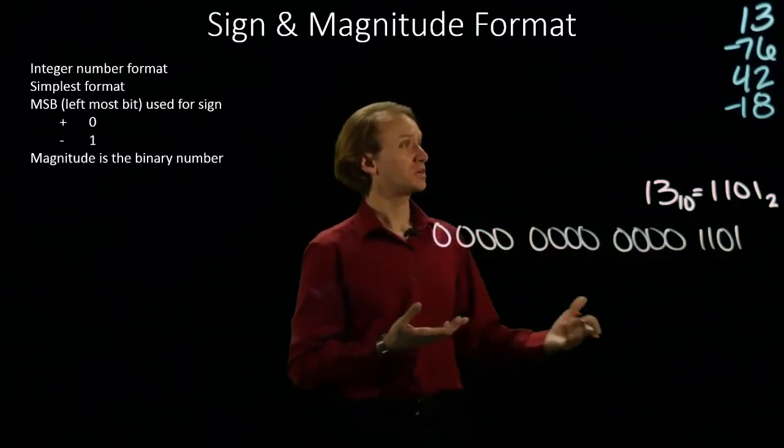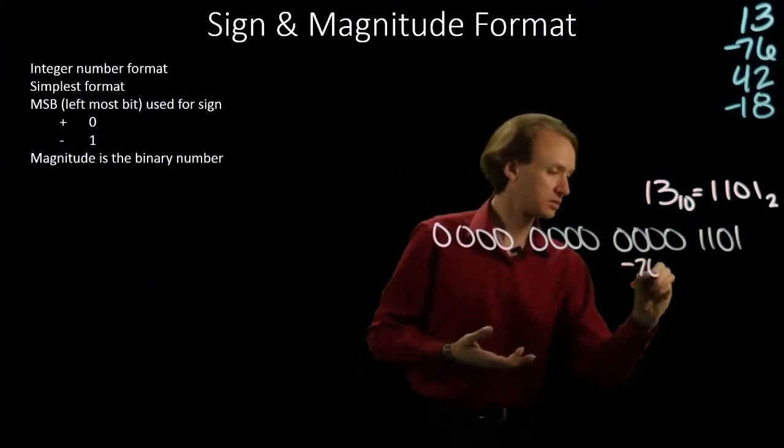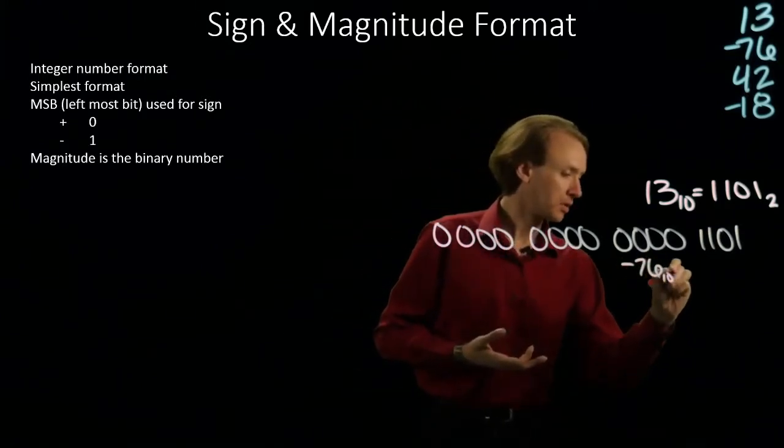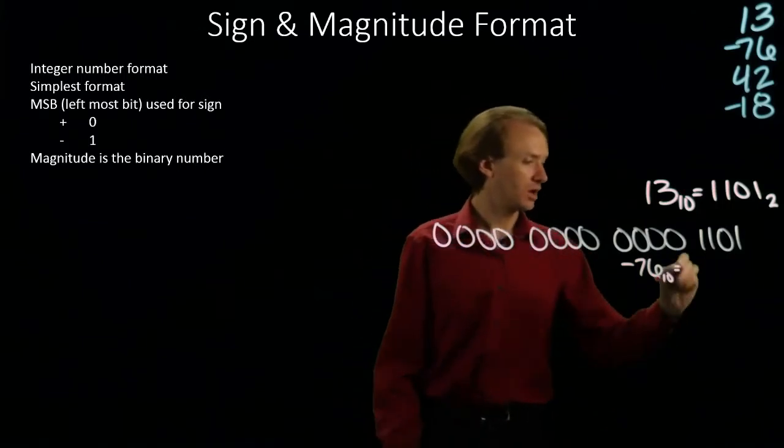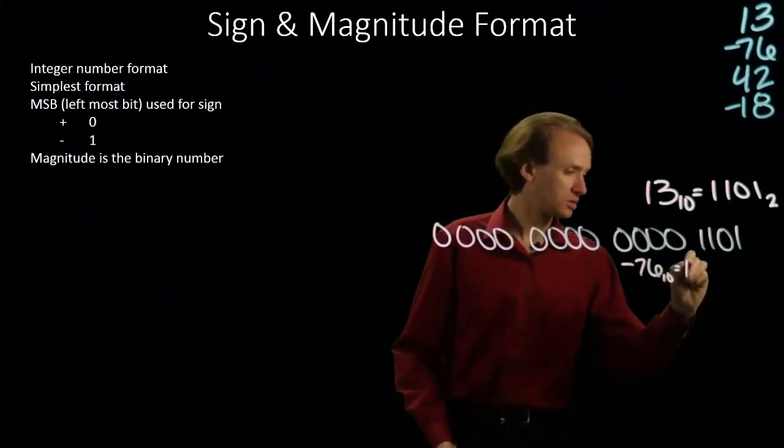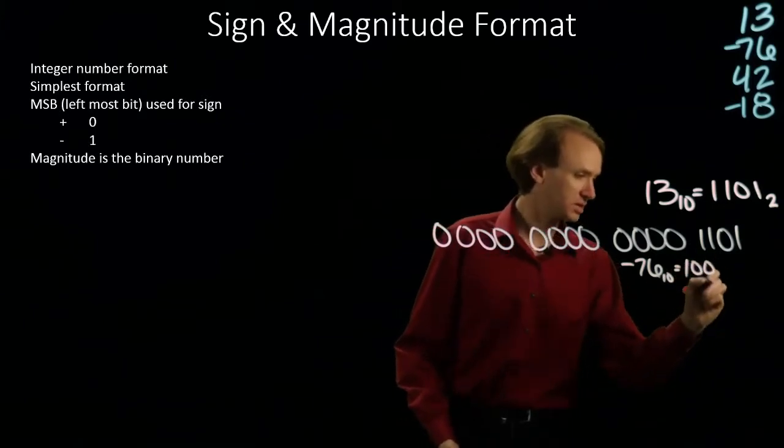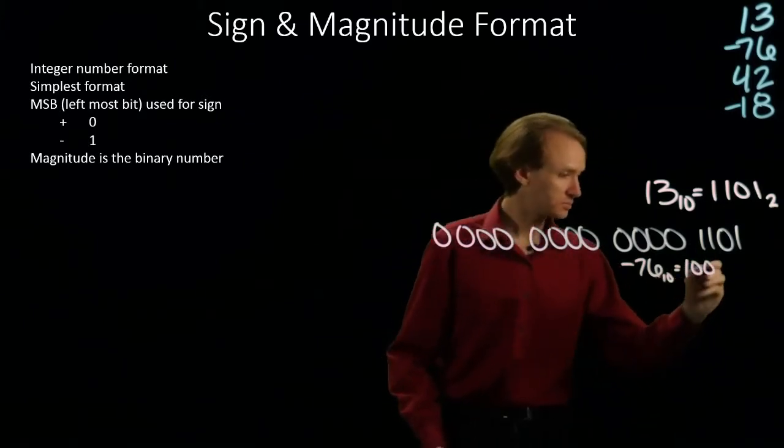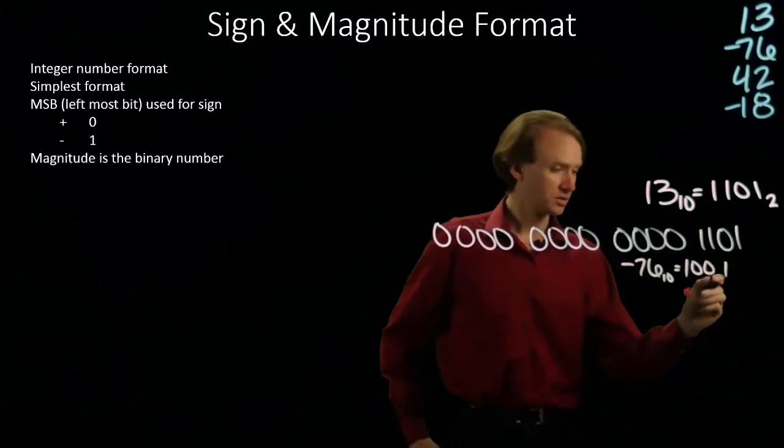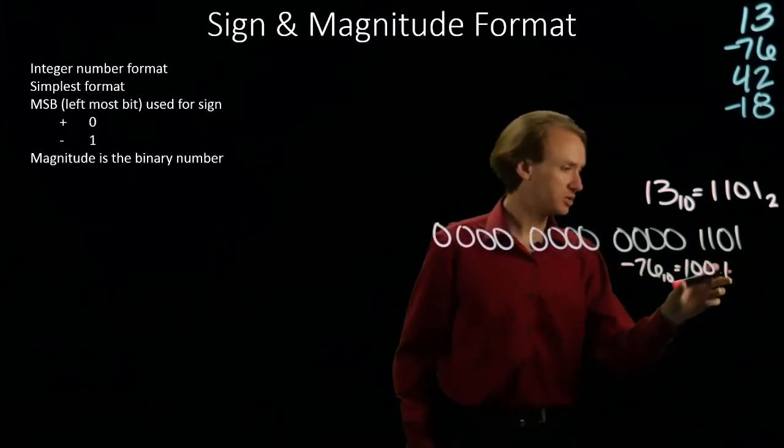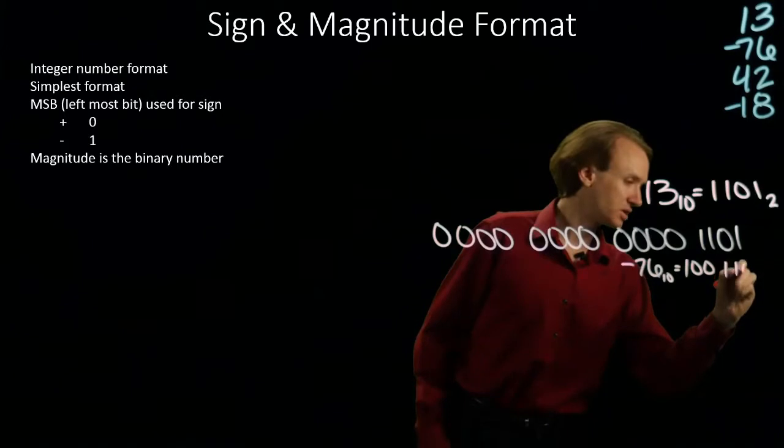My second example is negative 76. And here I'll have a 64, no 32s, no 16s. I'll have an 8. 8 plus 64 will give me 72, plus 4 is 76.